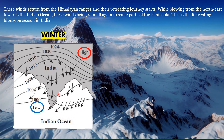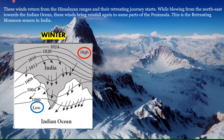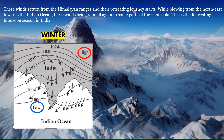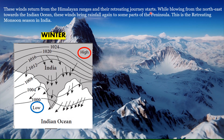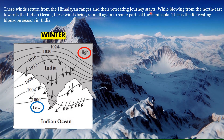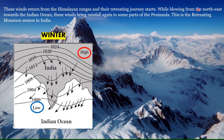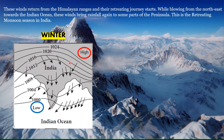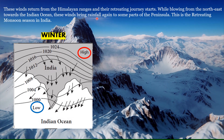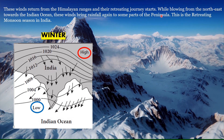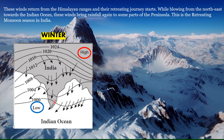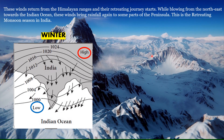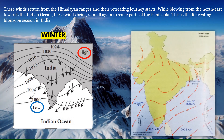The southwest monsoon winds return from the Himalayan ranges and their retreating journey begins. While blowing from the north-east towards the Indian Ocean, these winds bring rainfall again to parts of the peninsula — Tamil Nadu and Andhra Pradesh. This is the retreating monsoon season in India.